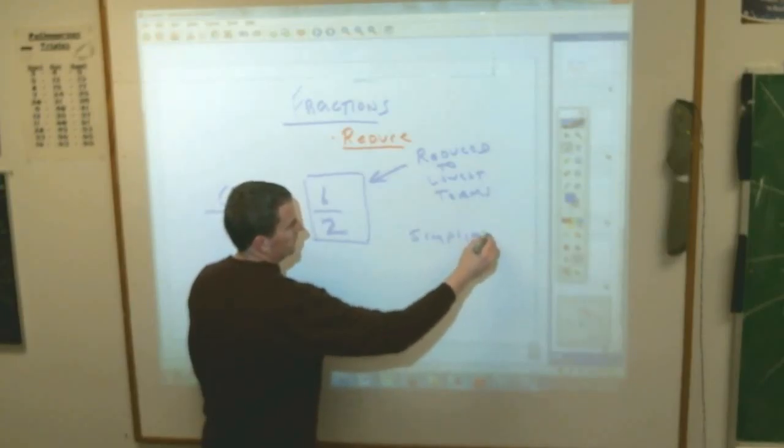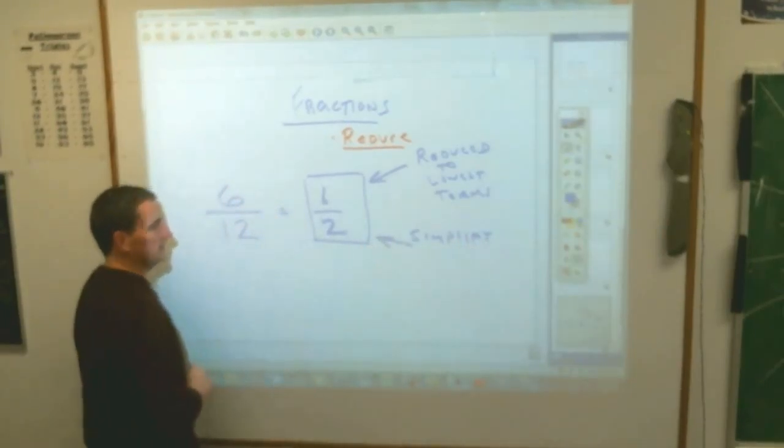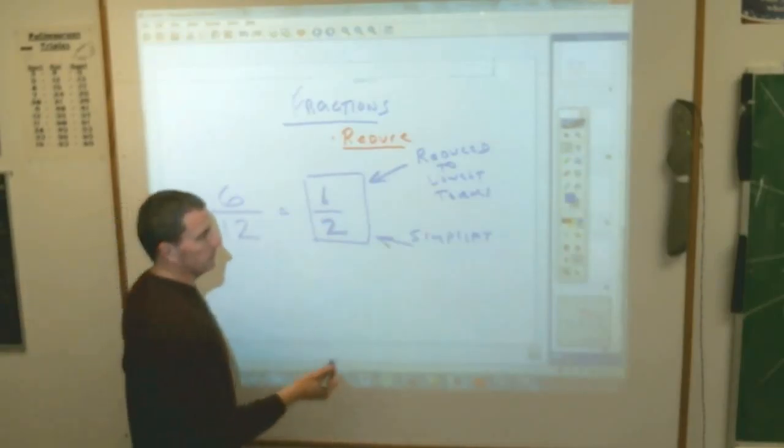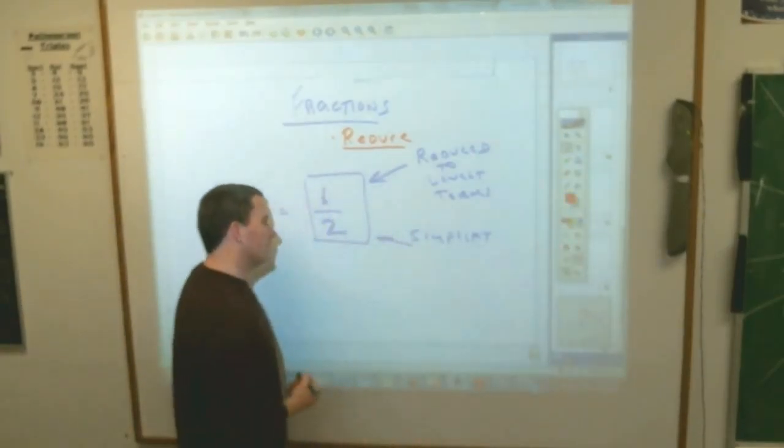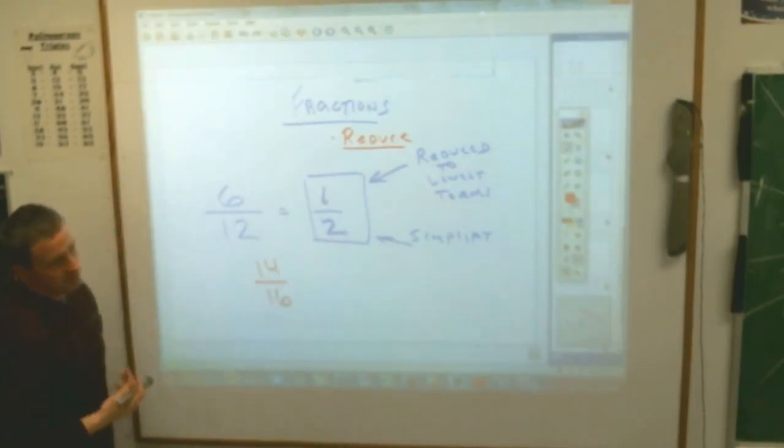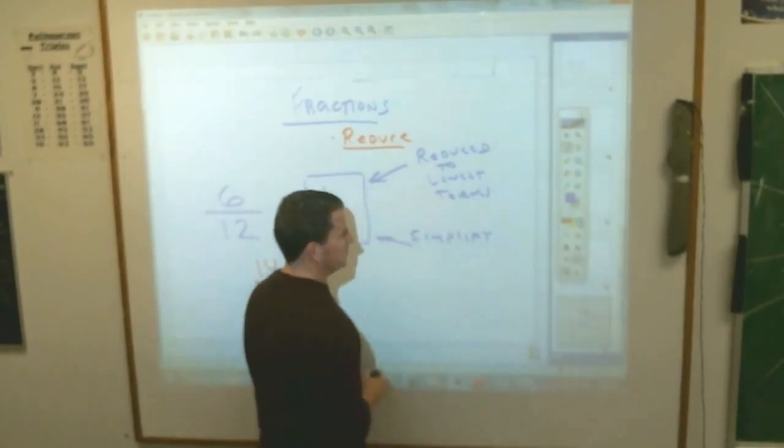If you ever hear the word simplifying, that means make it as easy to understand as possible. Now the question is, half is easy because it's something we deal with a lot, but what if you see something like this, 14 over 16. 14 over 16 is a fraction that can be reduced. How do I know that? And here is what you need to do.